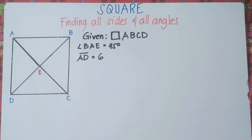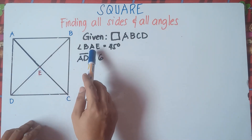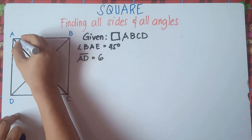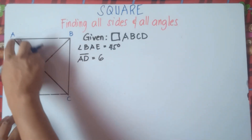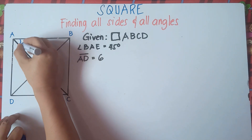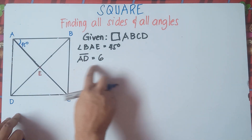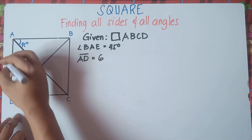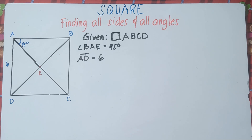Alright, so we have given square ABCD and we have a midpoint E. And given angle BAE is equals to 45 degrees. So A there, class, is the middle part. This angle here, angle BAE is equals to 45 degrees. And we have given line AD is equals to 6. And we are told to find all sides and all angles.